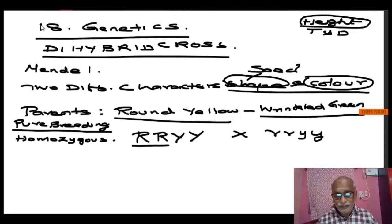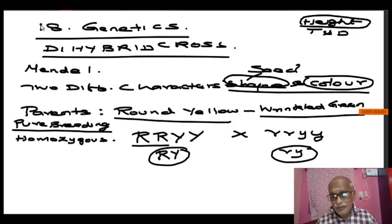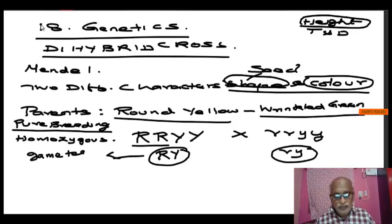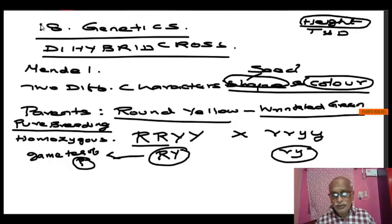Since it is homozygous, it will produce only one type of gamete — that is capital R and capital Y. And the recessive parent will also produce only one type of gamete, that is small r and small y. These are the gametes of the parents. Always remember that the parents are pure breeding, so they give only one type of gamete, which is homozygous.